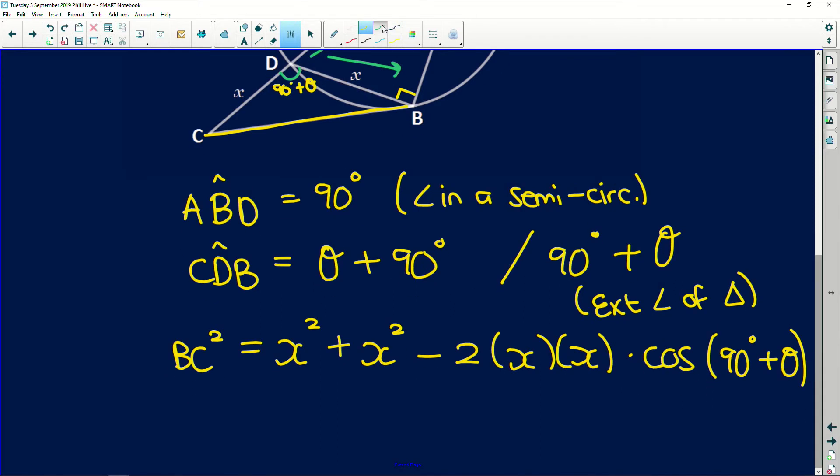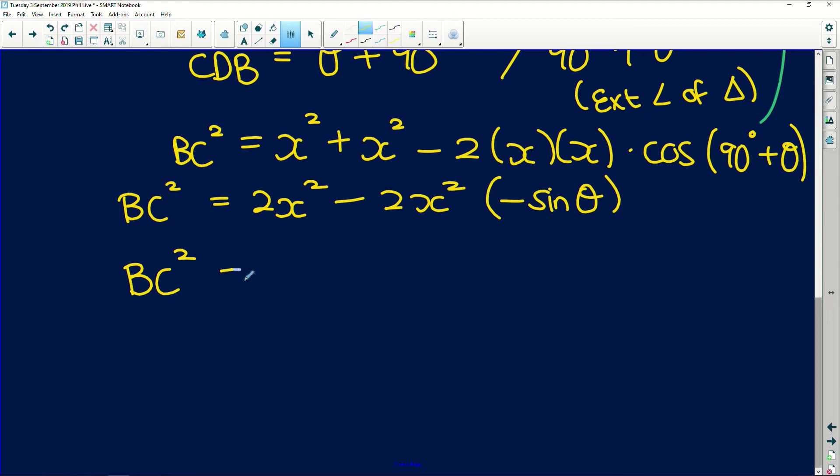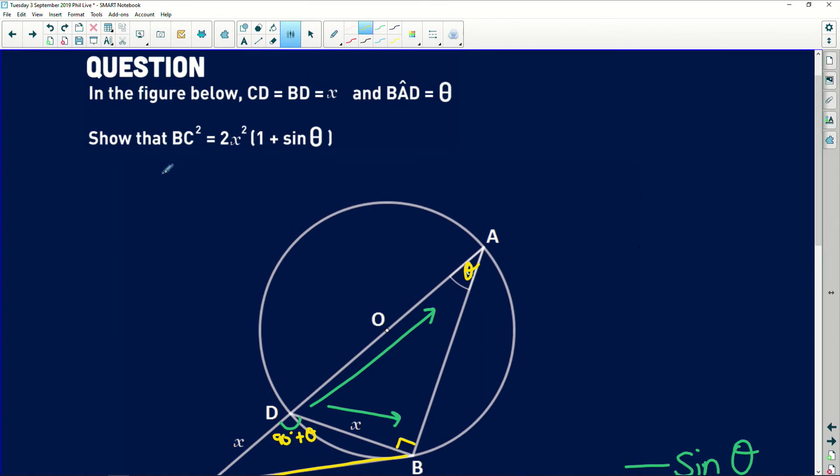Now remember, the moment you see cos of 90 degrees plus theta, it should immediately tell you that it is negative sine of theta because of co-ratios. So BC squared is equal to 2X squared minus another 2X squared multiplied by negative sine of theta. Now we get BC squared is equal to, let's distribute this negative in first. So we get 2X squared plus 2X squared multiplied by sine of theta, which gives us, if we take out 2X squared as a common factor, we get 1 plus sine of theta. And that is exactly what we were trying to find over here.